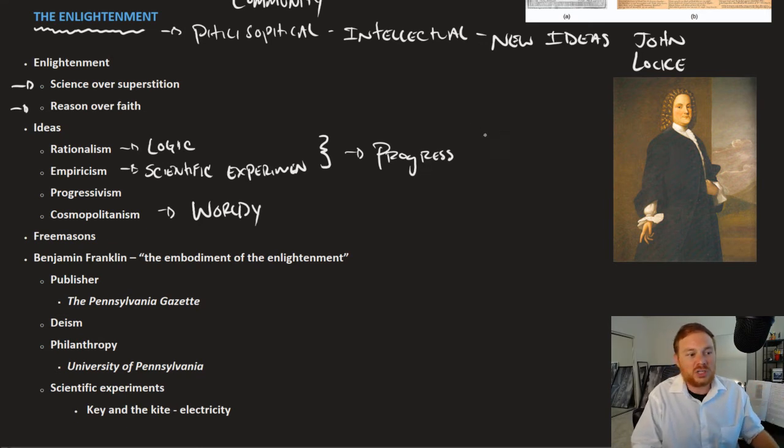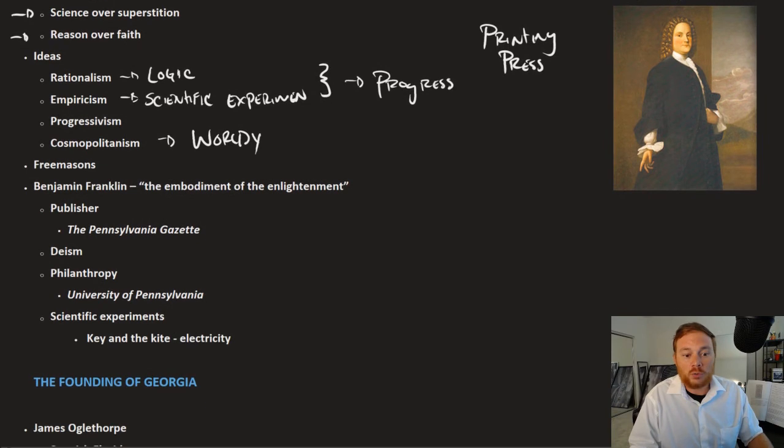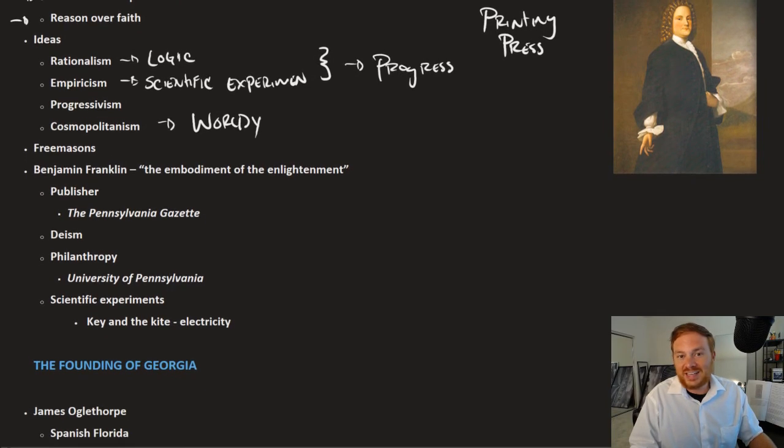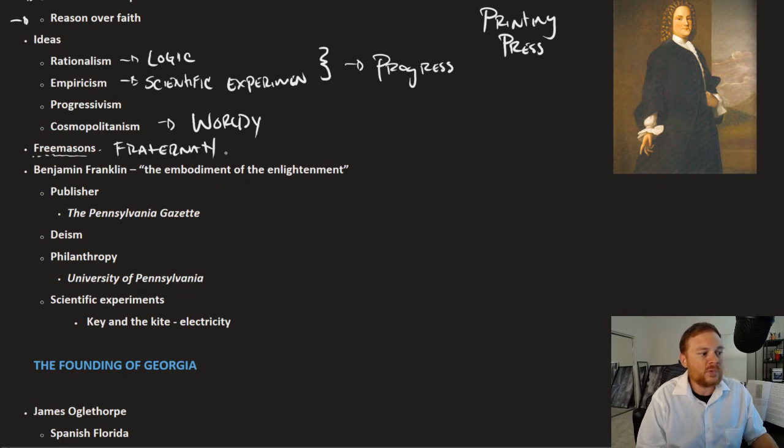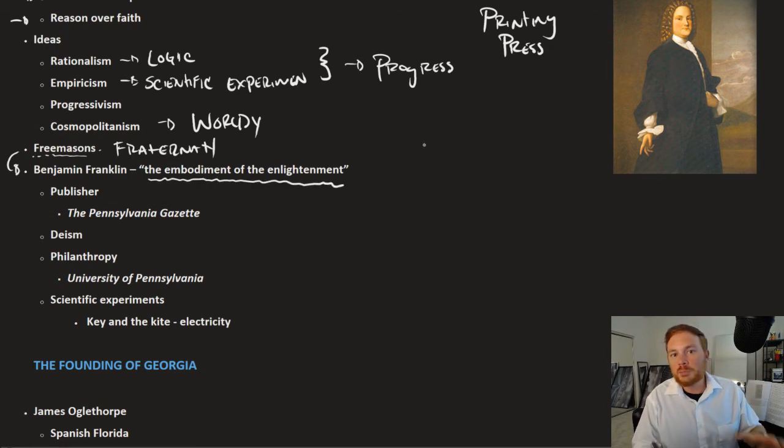All of these ideas, rationalism, logic, empiricism, progressivism, cosmopolitanism, all of these began to spread not just in England but especially in the New World due to technologies like the printing press. You could read about these ideas almost daily. And if you couldn't read, then somebody could potentially read to you. You had organizations that were purely dedicated to Enlightenment principles. Organizations like the Freemasons, this was a fraternity that promoted principles of Enlightenment thought. One of its members, Benjamin Franklin, was what we call the embodiment of the Enlightenment in America. If there was one person who represented the Enlightenment and Enlightenment principles in the 13 colonies, it was Benjamin Franklin.